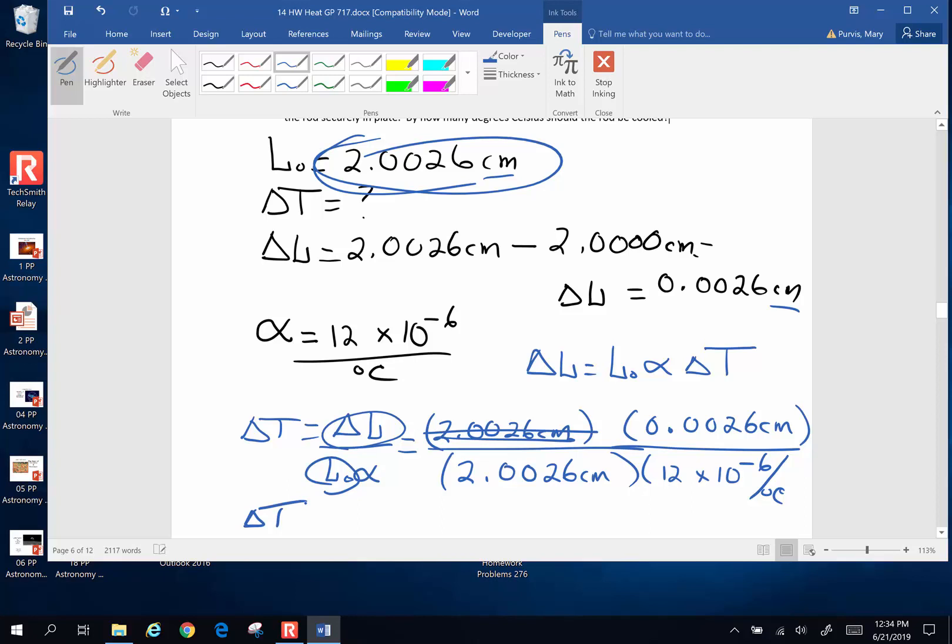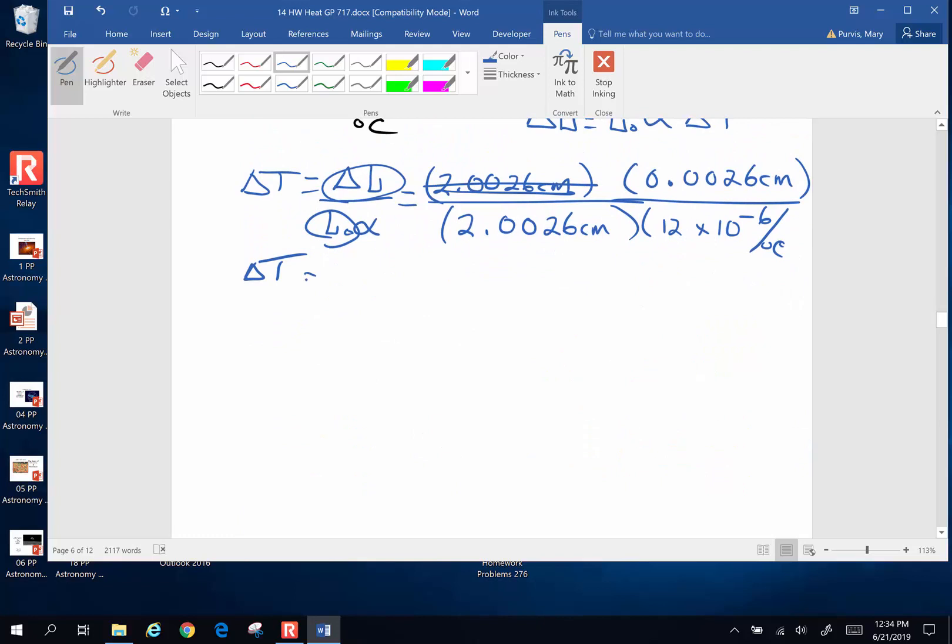So when I do the math, let's do this. 0.0026 divided by 2.0026, then divided by 12 times 10 to the negative 6th. And I ended up with a delta T, a change in temperature, of 108 degrees Celsius.